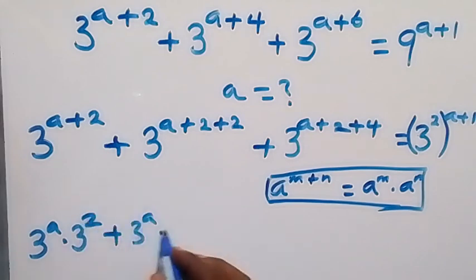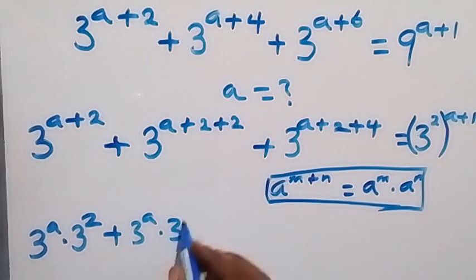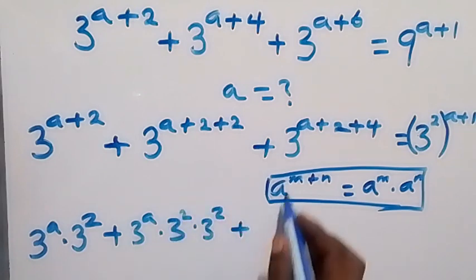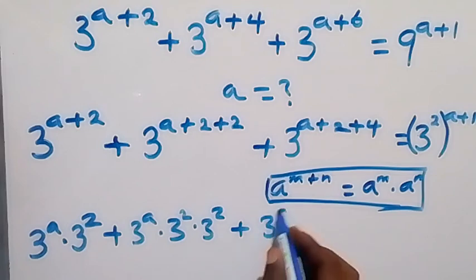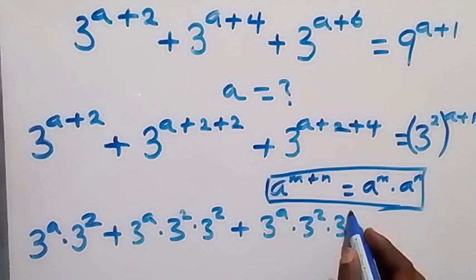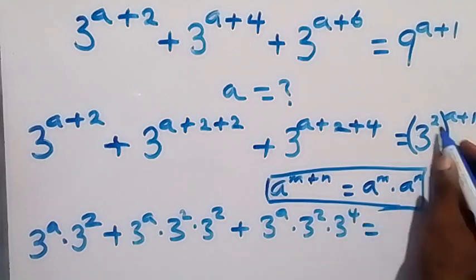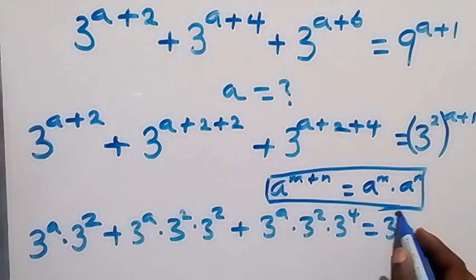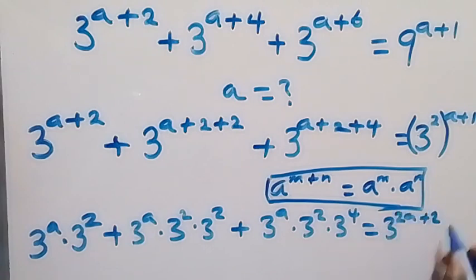Plus, here it becomes 3 raised to power a times 3 raised to power 2 times 3 raised to power 2, then plus we have 3 raised to power a times 3 raised to power 2 times 3 raised to power 4, then equals to — from here this power multiplies and this will be 3 raised to power 2a plus 2.